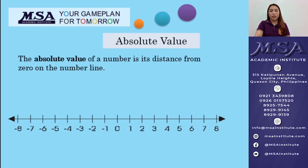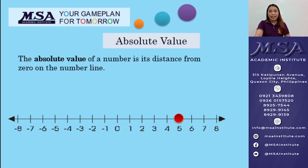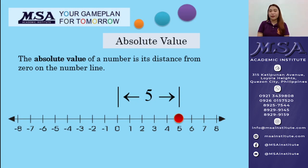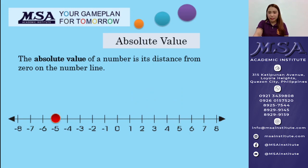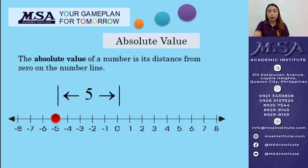The absolute value of any number is equal to a positive number or 0. Let's try to use a number line to represent the absolute value of 5 and negative 5. For positive 5: it is 5 units away from 0, so the absolute value of 5 is 5. For negative 5: it is also 5 units away from 0, so the absolute value of negative 5 is 5.